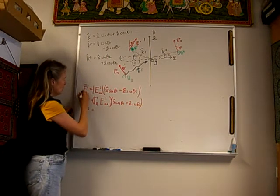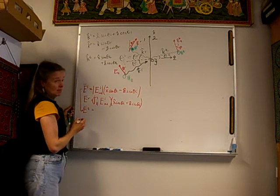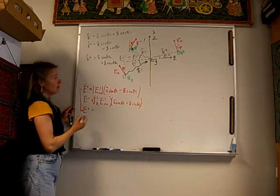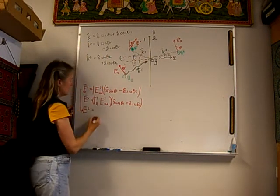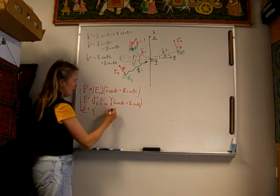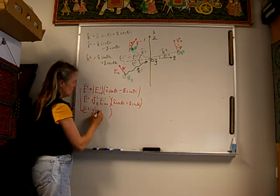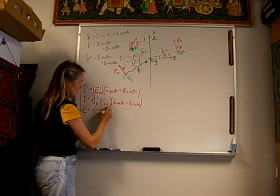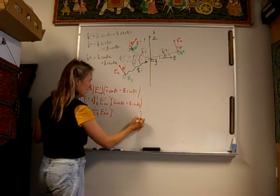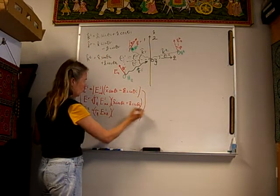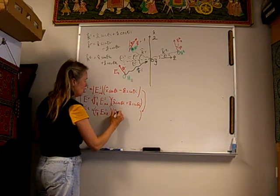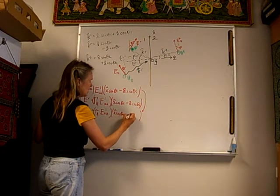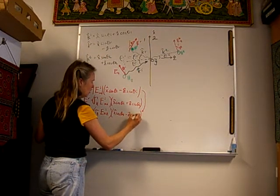Just like before, the incident field and transmitted field are the same except the angle theta i transfers to theta t. The magnitude of the transmitted field will be tau parallel times E incident, and the polarization is x cosine of theta t minus z sine of theta t.